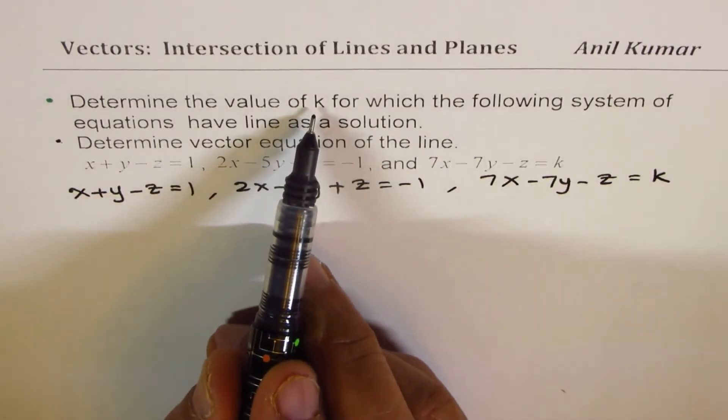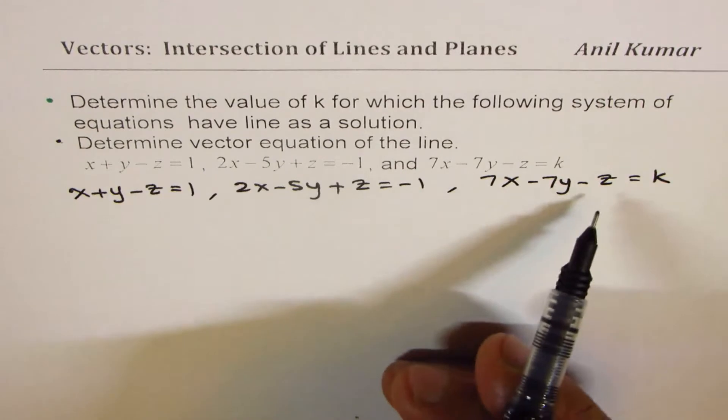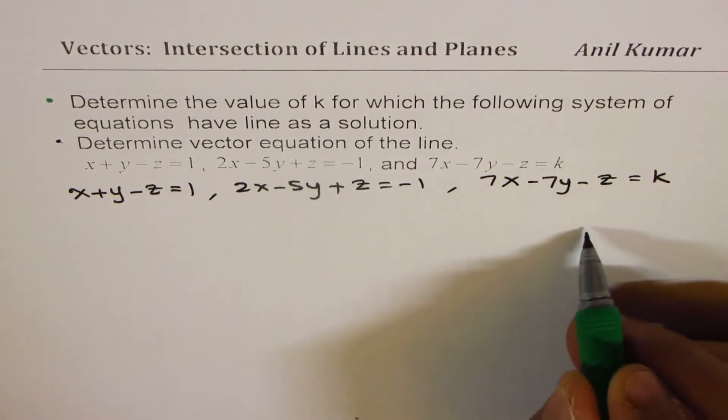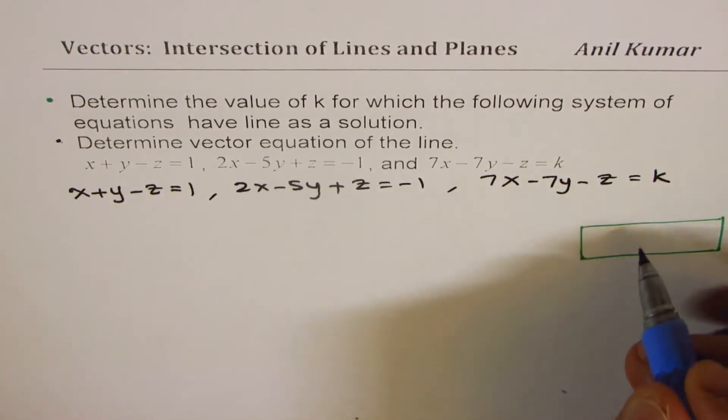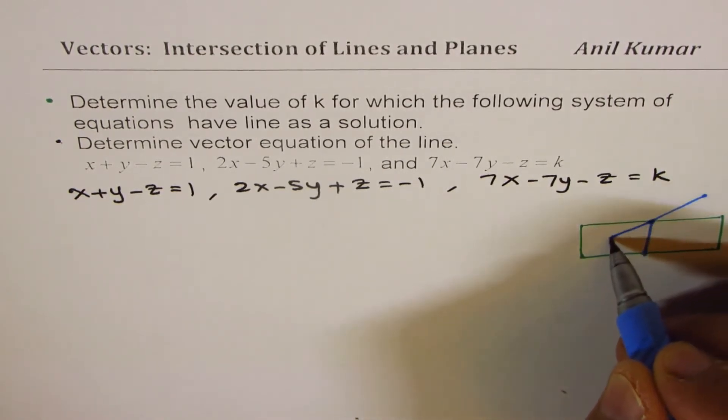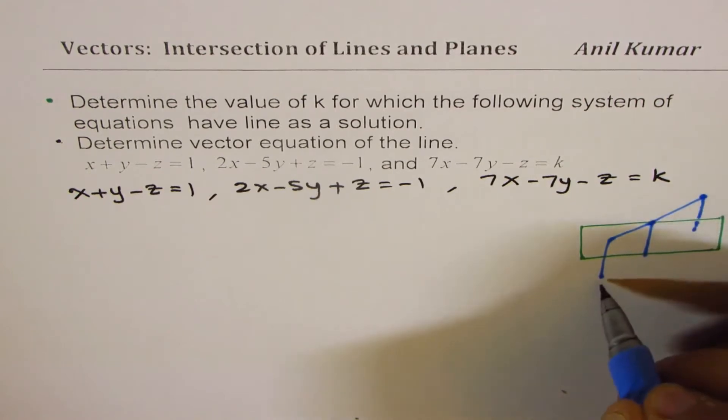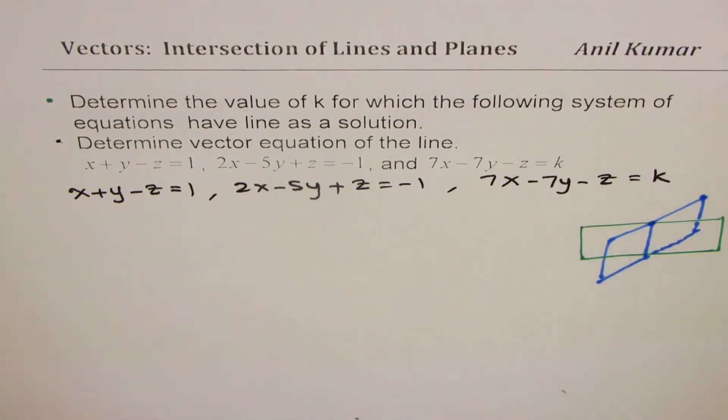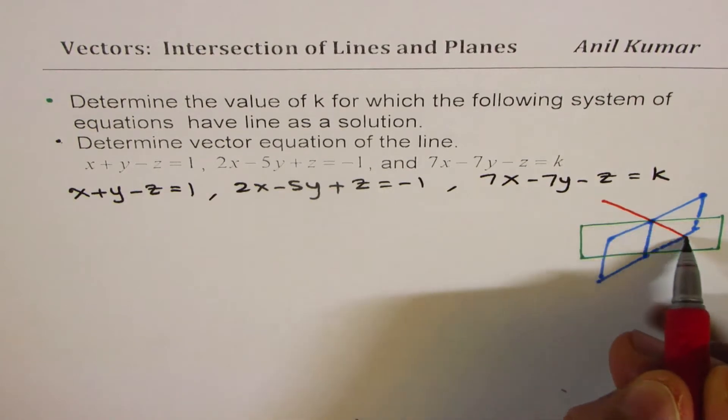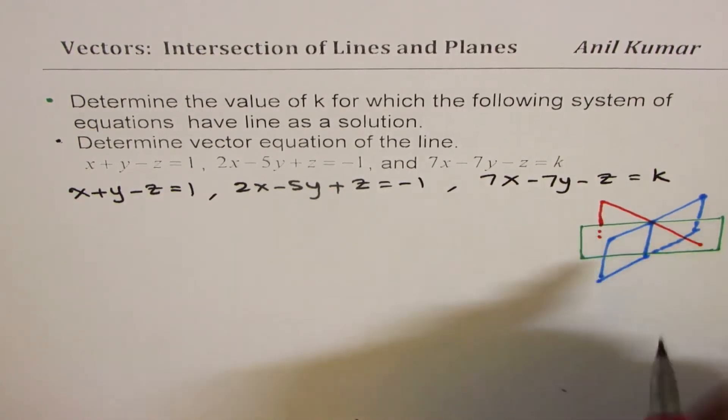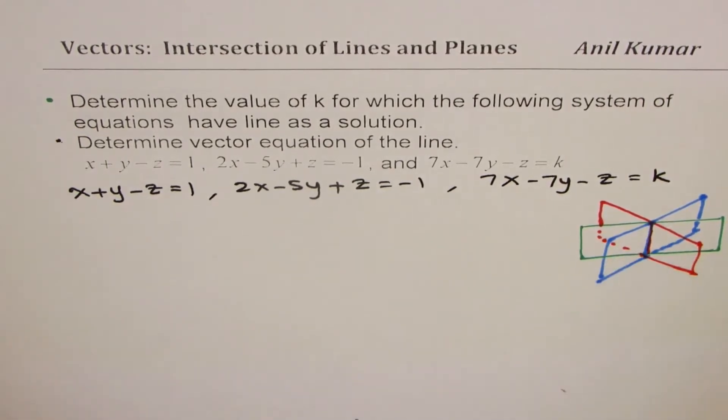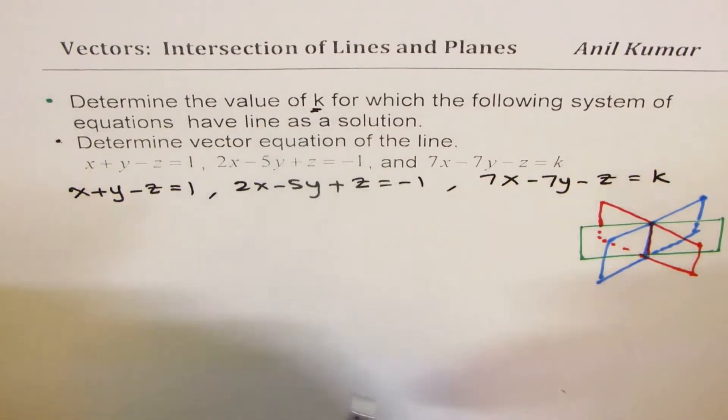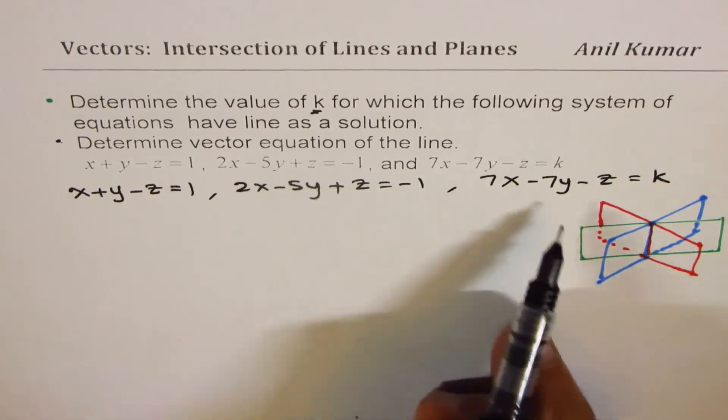So first step, we need to find k so that point of intersection of these planes is a line. So what we are trying to figure out is that these are the three planes. Let's say something like this. They intersect at a line. So two planes will intersect at a line. The third plane also intersects at the same line. We need to find the value of k which can make it. So the idea here is,